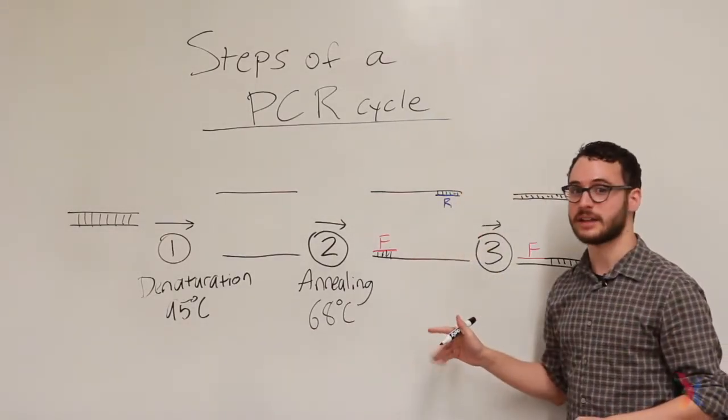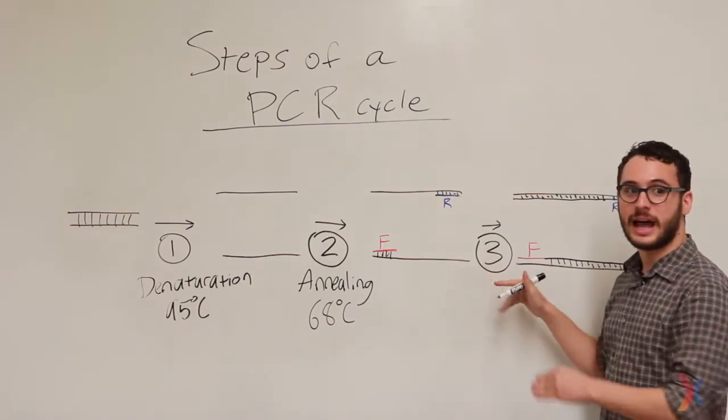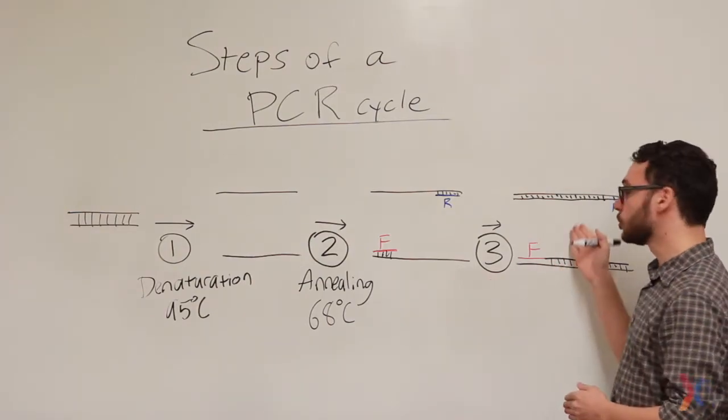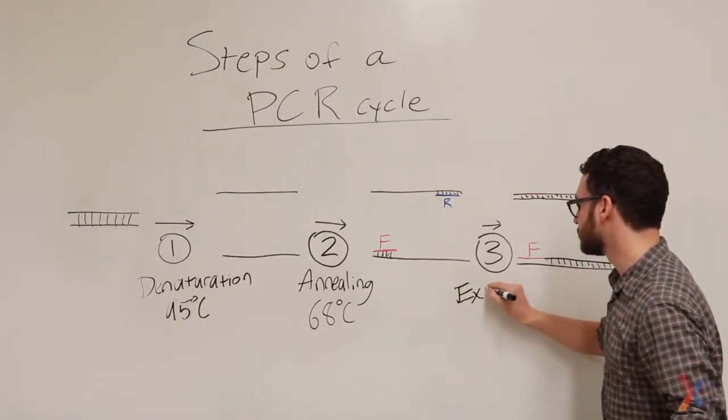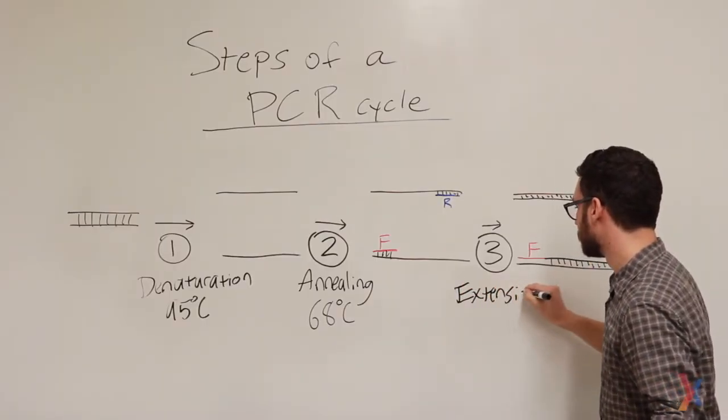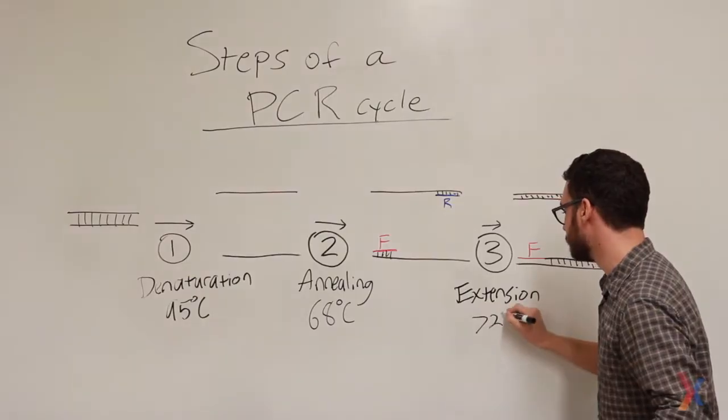Then in the last step, DNA polymerase moves in and begins replication, generating two double-stranded pieces of DNA. This step is called extension, and it happens at 72 degrees Celsius.